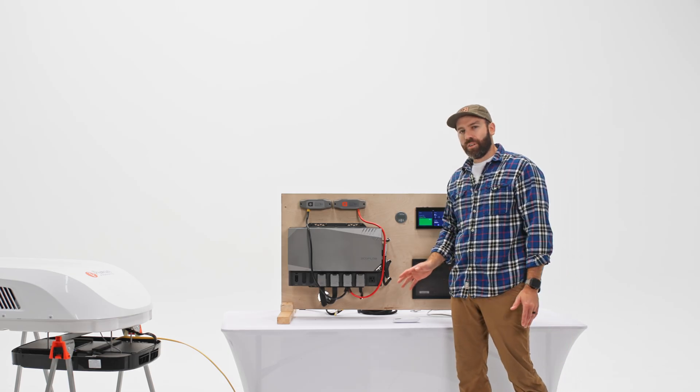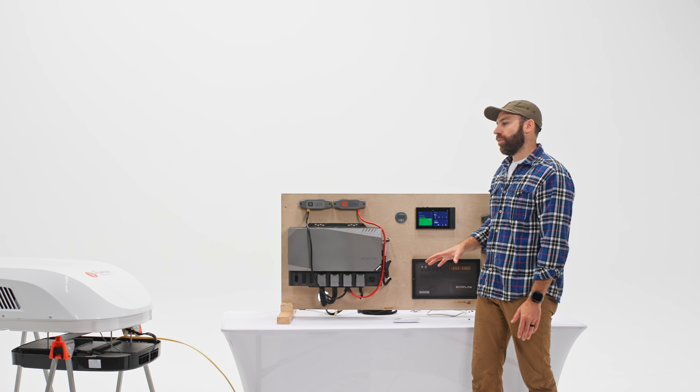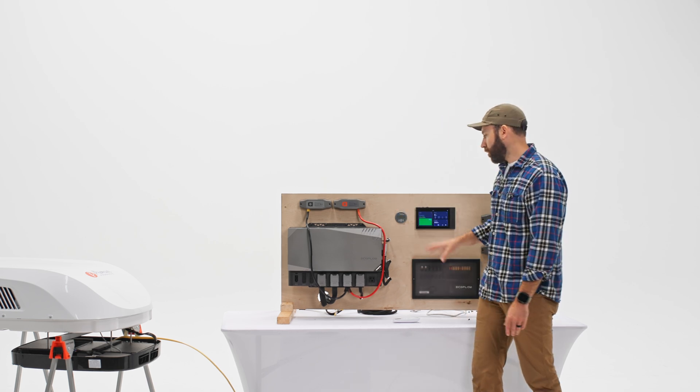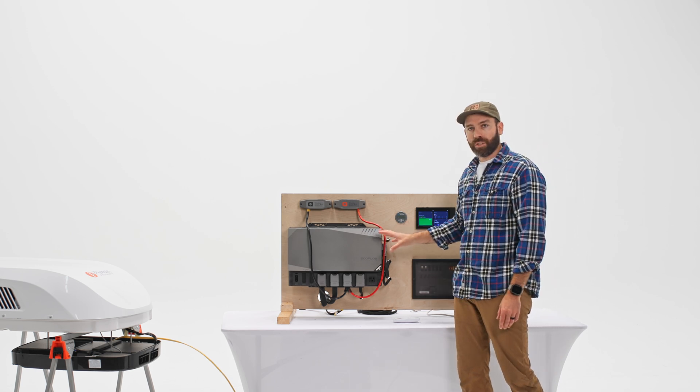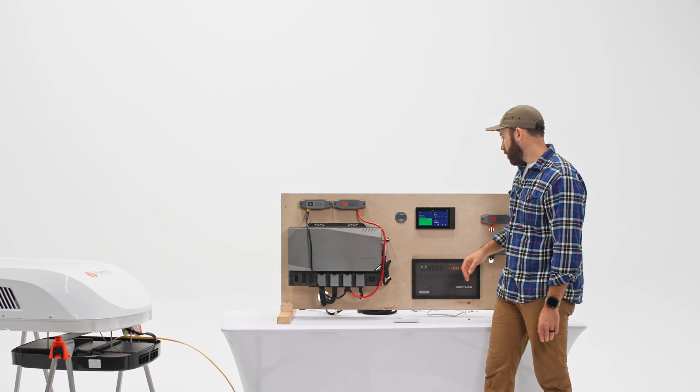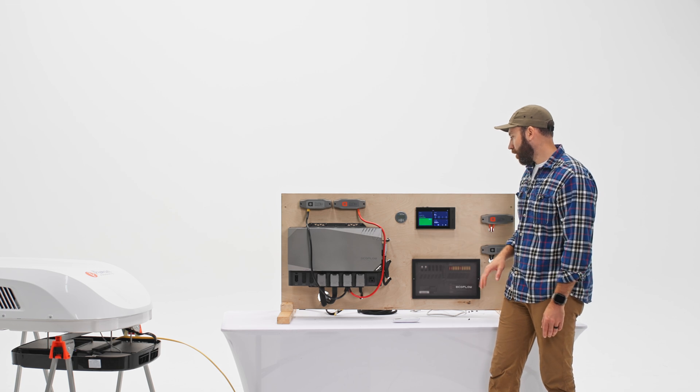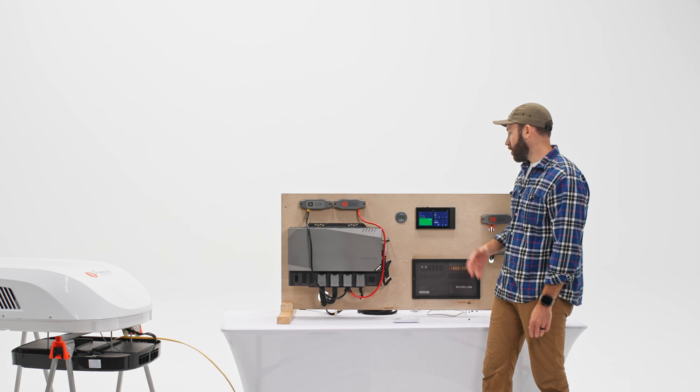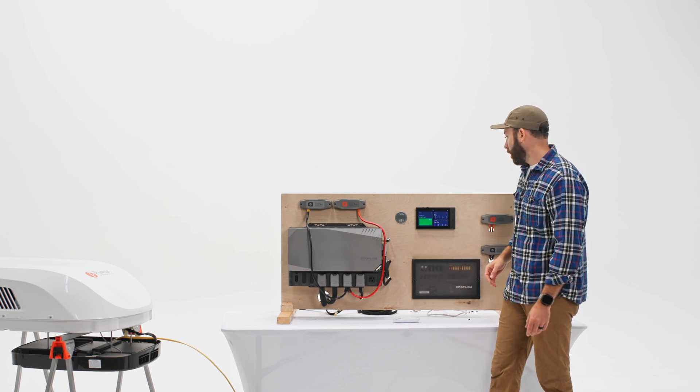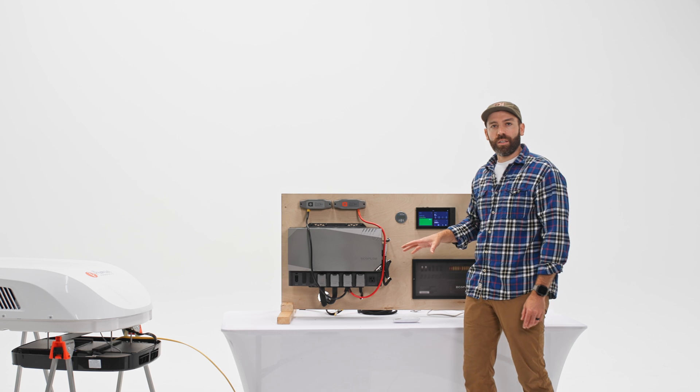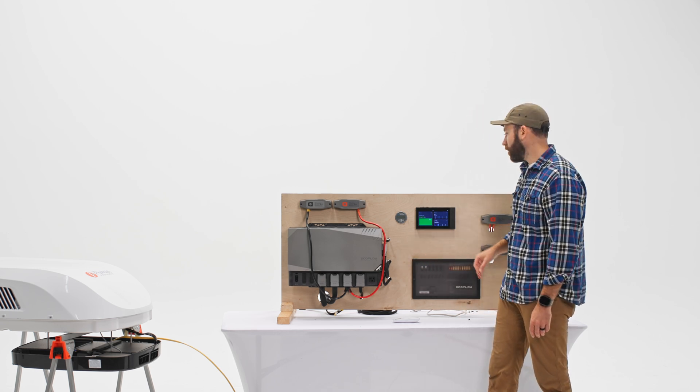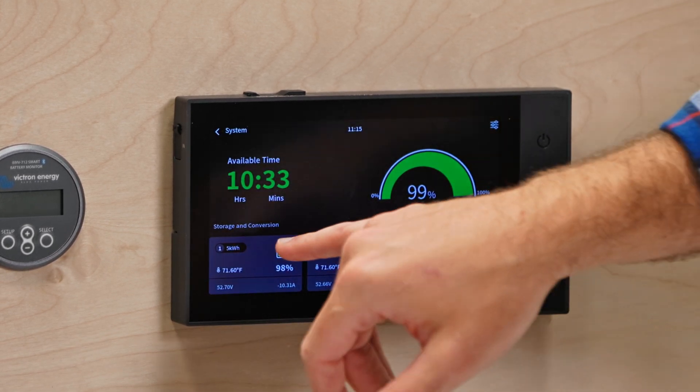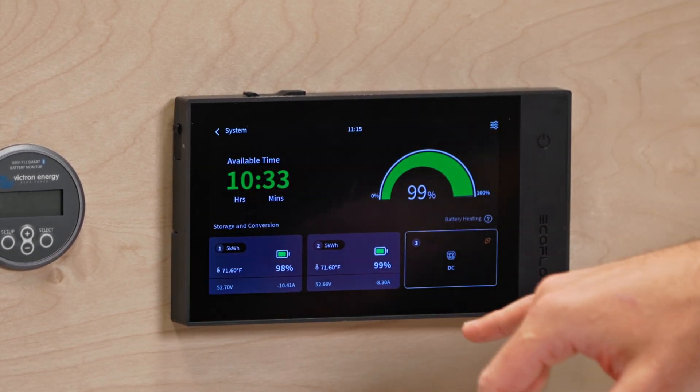So this unit does have an inverter-driven compressor. It is not completely variable speed, but it does have a bit of a slow soft start, so it's not going to overdrive the inverter. This is capable of doing 3600 watts, well within spec for this AC unit which is currently pulling around 950 watts. We're showing an available time of 10 hours and 34 minutes, so definitely enough to get you through a night of sleeping. And this is a 10 kilowatt system, so we've got two 5 kilowatt hour batteries.